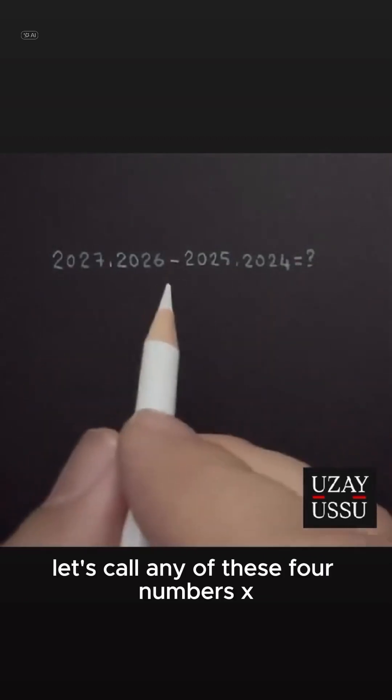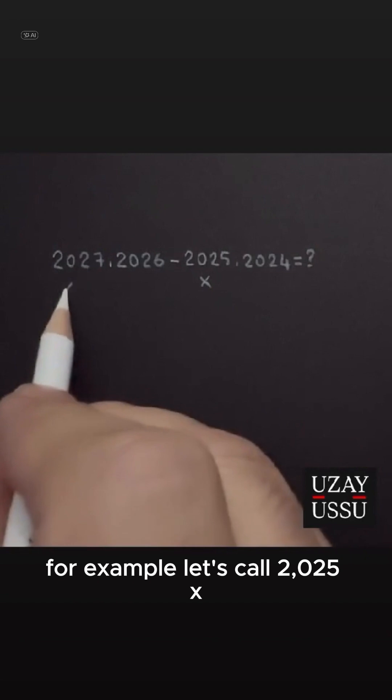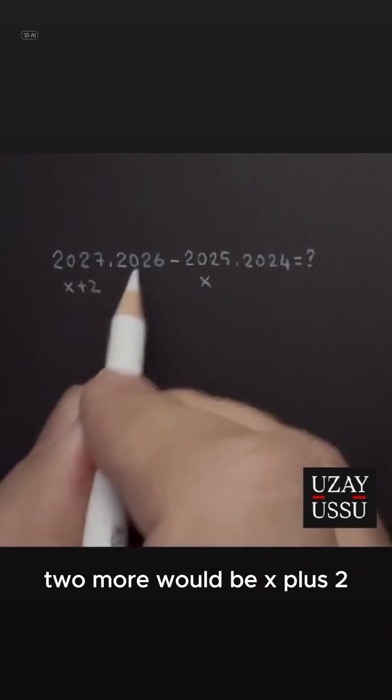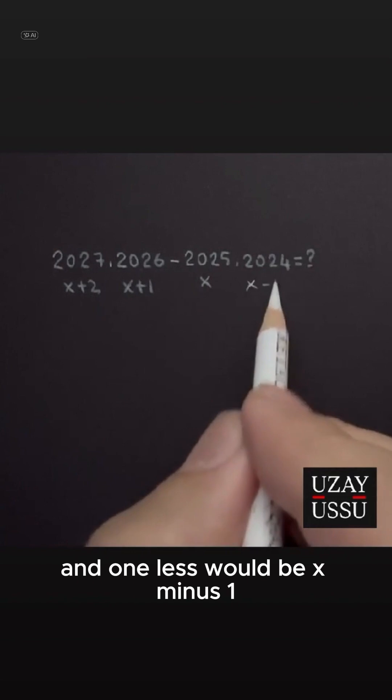Let's call any of these four numbers x. For example, let's call 2025 x. Two more would be x plus 2, one more would be x plus 1, and one less would be x minus 1.